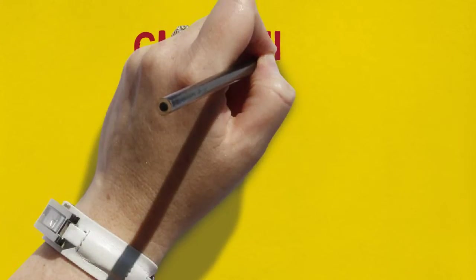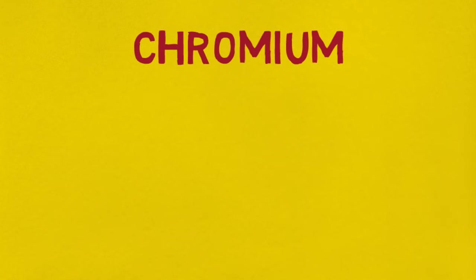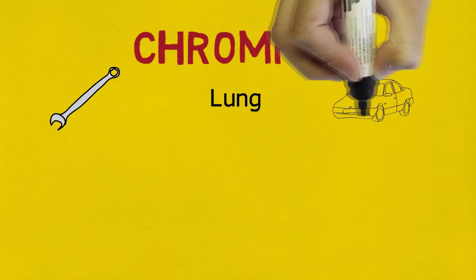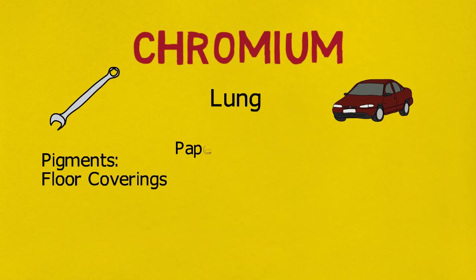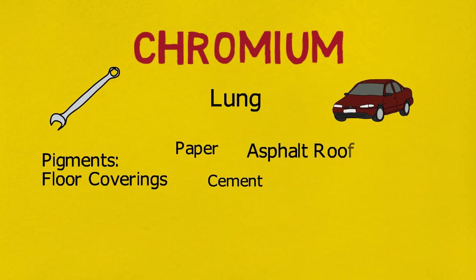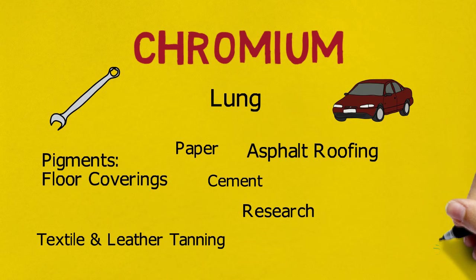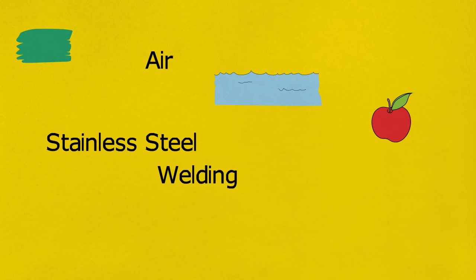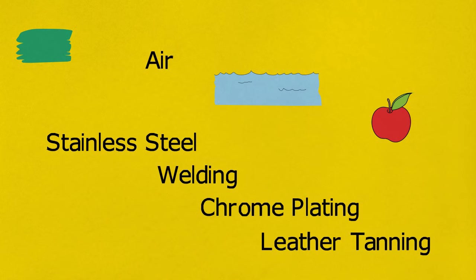Some chromium compounds are known to cause lung cancer. The steel industry is the major user of chromium; it is used to prevent corrosion of metal accessories including automotive parts, as well as for electroplating and layering one metal over another. Chromium is also used in pigments, floor coverings, some papers, cement, asphalt roofing, some research applications, the textile and leather tanning industry, and for creating an emerald color in colored glass. Chromium is widely distributed in air, water, soil, and food, and everyone is exposed to some of these compounds. The highest exposure occurs in occupations related to stainless steel production, welding, chrome plating, and leather tanning.